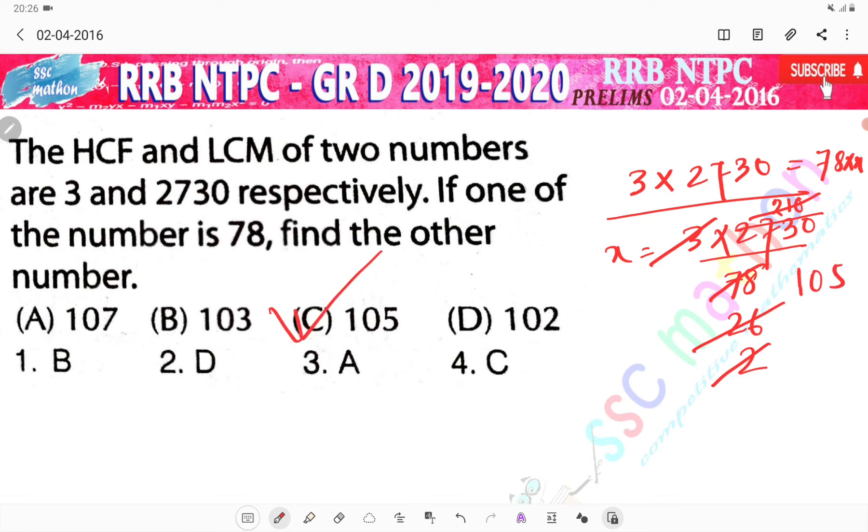Option C, 105 is correct. HCF into LCM of the two numbers equals the multiplication of the two numbers.